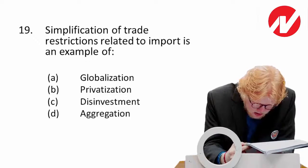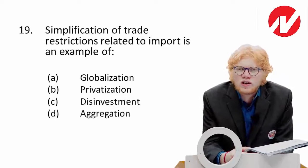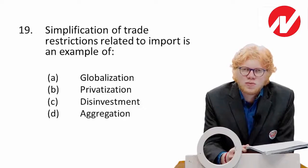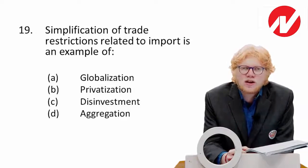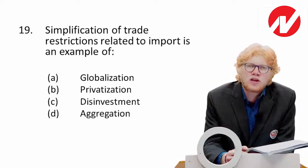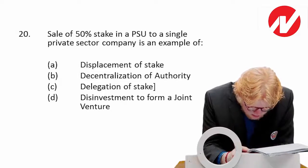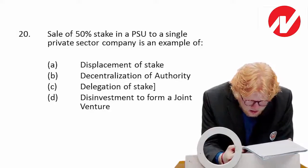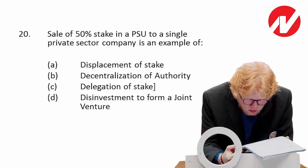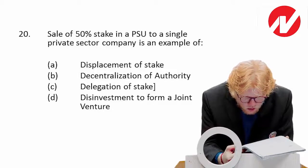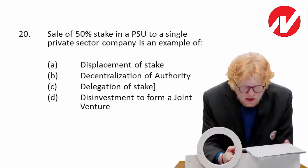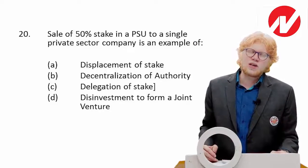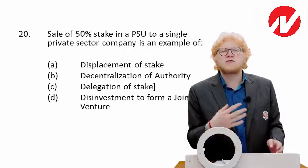Next: simplification of trade restrictions related to imports is an example of — the confusion may arise between liberalization and globalization. If a reduction in laws takes place it is liberalization, but the purpose behind it is globalization. So more appropriately the answer is globalization. Next: sale of 50 percent stake in a PSU to a single private sector company — displacement, decentralization of authority, delegation of stake, or disinvestment to form a joint venture? The answer is disinvestment, where we sell our stake to bring another company into the picture.